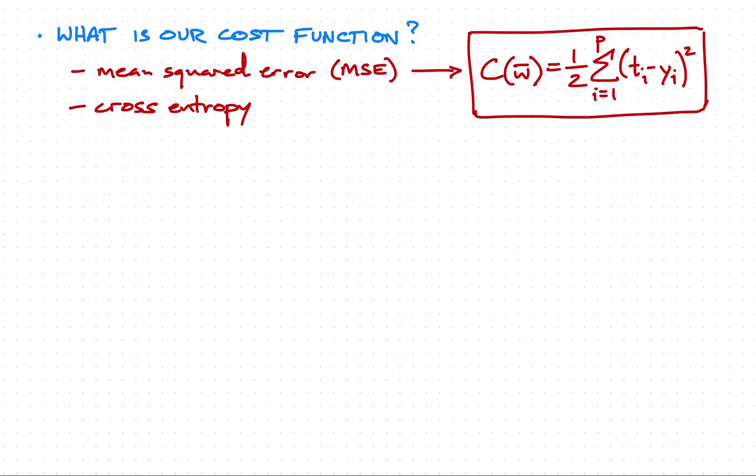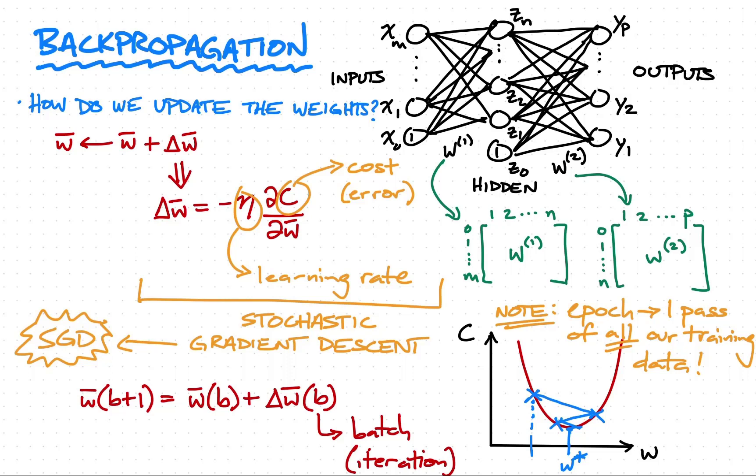You'll notice that on the right side of the equals sign there are no w's explicitly written. This is what makes deriving the equations a little bit difficult, because we can't just take the derivative with respect to w if we have no idea where the w's are. There are two types of weights: input-to-hidden layer weights W1 and hidden-to-output weights W2. Since we are starting from the outputs and working our way back, it makes sense to update the hidden-to-output weights first, as they have more direct influence on each of the output neurons.